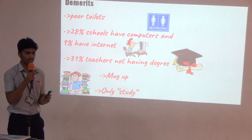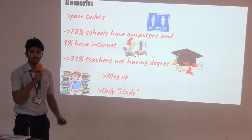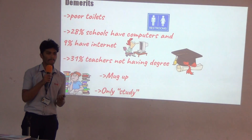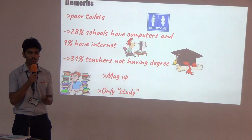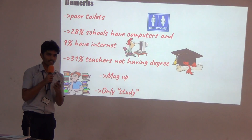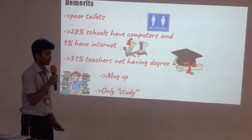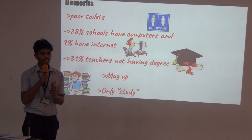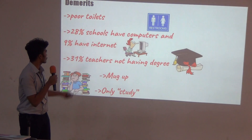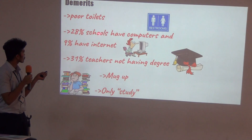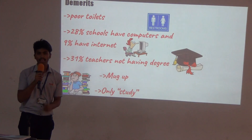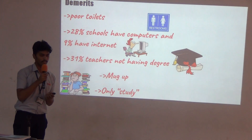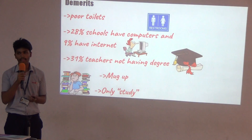These are some demerits that we see. In so many government schools and colleges, there is a problem of poor sanitation — there is no proper toilet facility. And some of the government schools have only a few computers, with only 9% of them having internet facilities, and the rest not having anything.